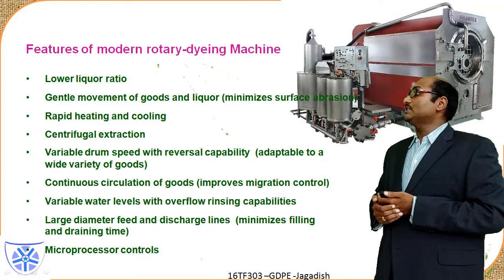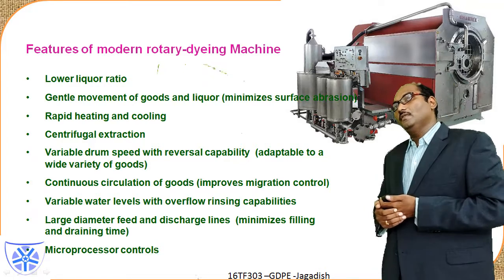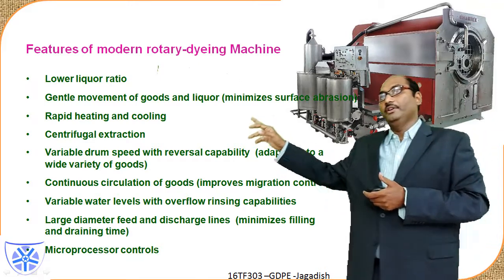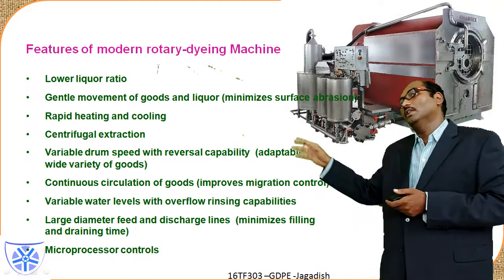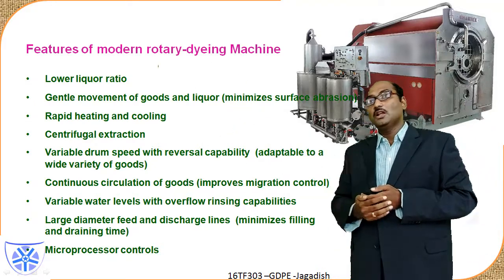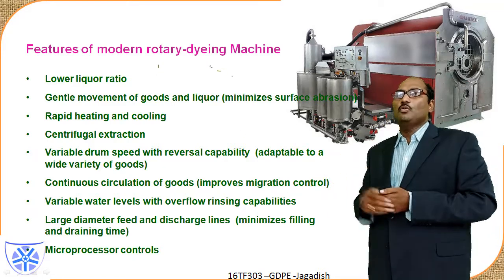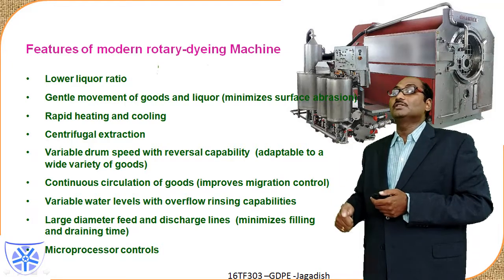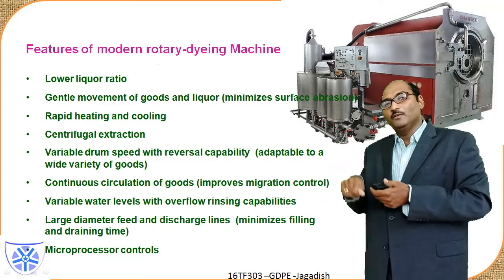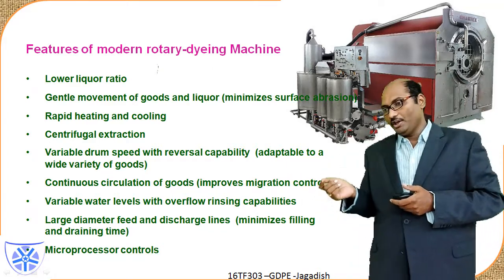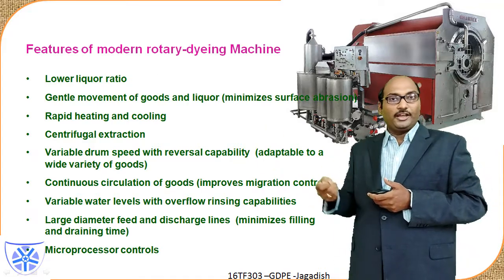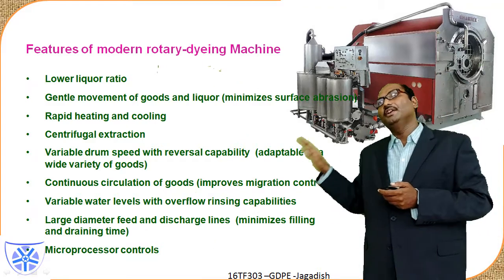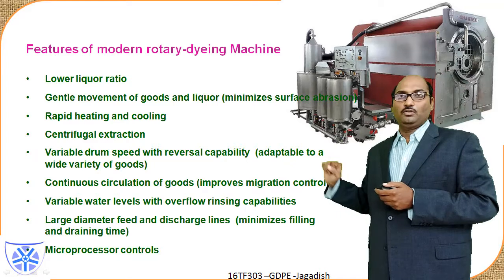The drum can alternate direction — for example, 30 seconds clockwise and 30 seconds anti-clockwise — for continuous circulation of goods, improving dye migration control and reducing entanglement. Variable water levels with overflow rinsing capabilities and automatic drainage are also features. Large diameter feed and discharge lines minimize filling and draining time. Stock tanks adjacent to the machine hold different chemicals and dye particles, all controlled by microprocessor for automatic dosing.